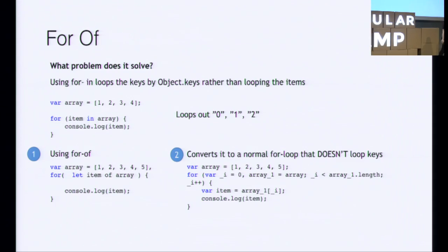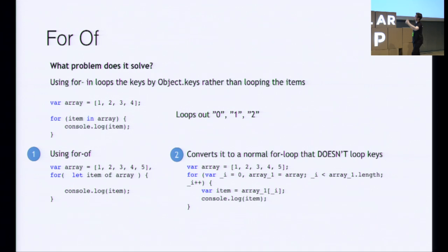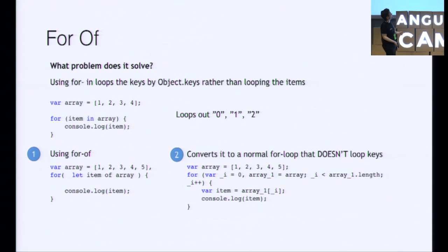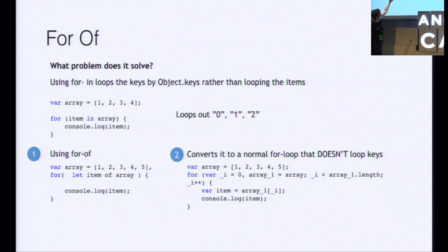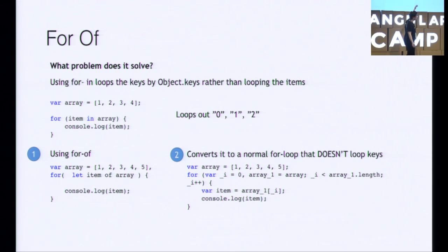For-of is a very interesting construct. It solves the problem of using the for-in loop — in ES5, for-in loops the keys of an array, so we get zero, one, and two instead of the actual values, which is not what we want. The for-of loop fixes this. Looking at example one, this transpiles into ES5 using a proper for-loop. So for-of is a safer version when iterating arrays.